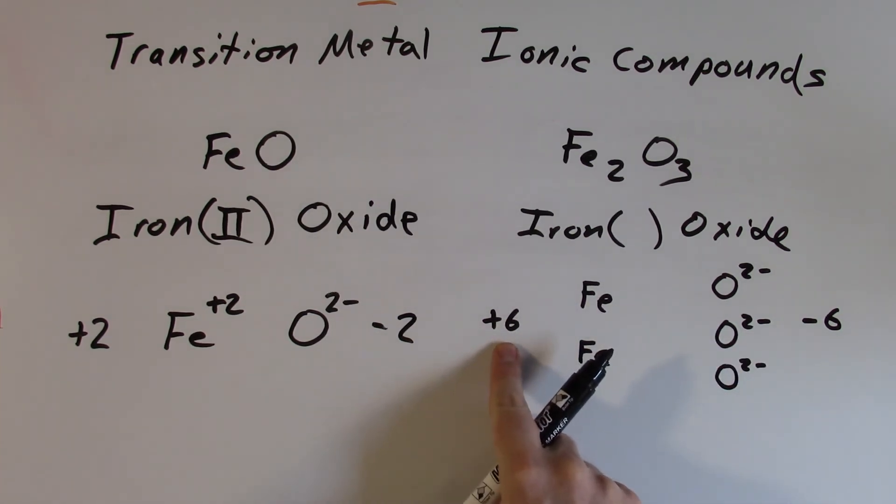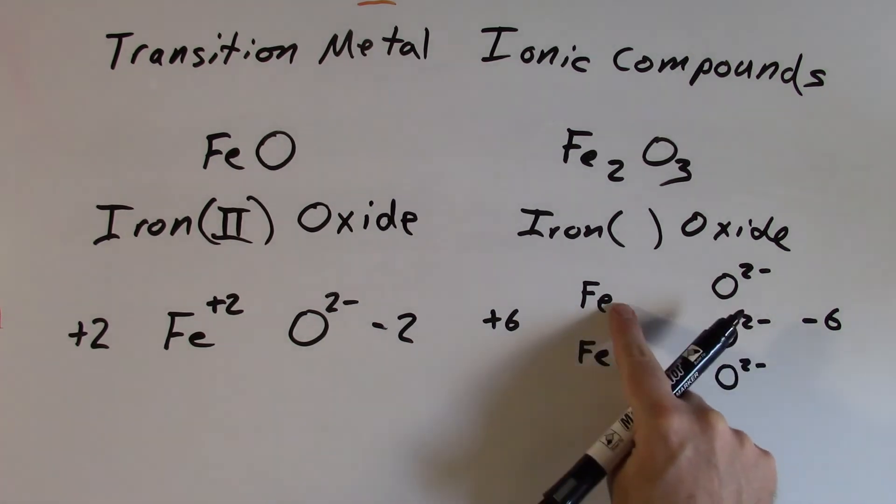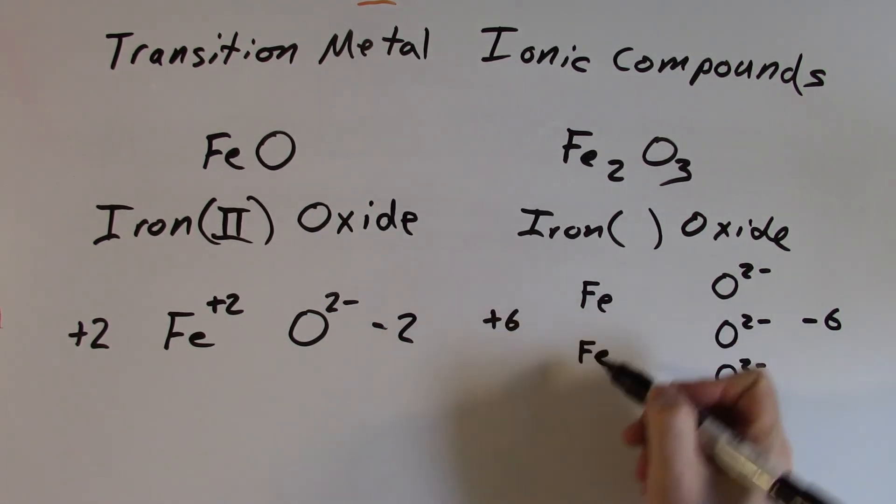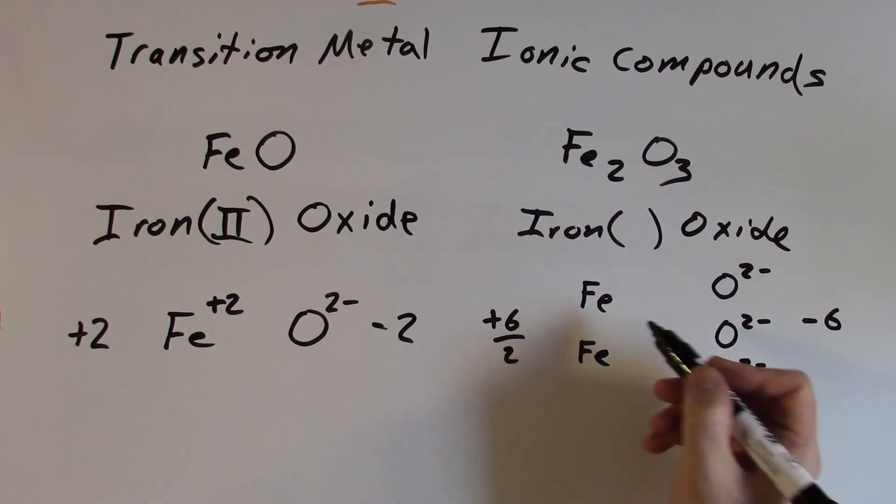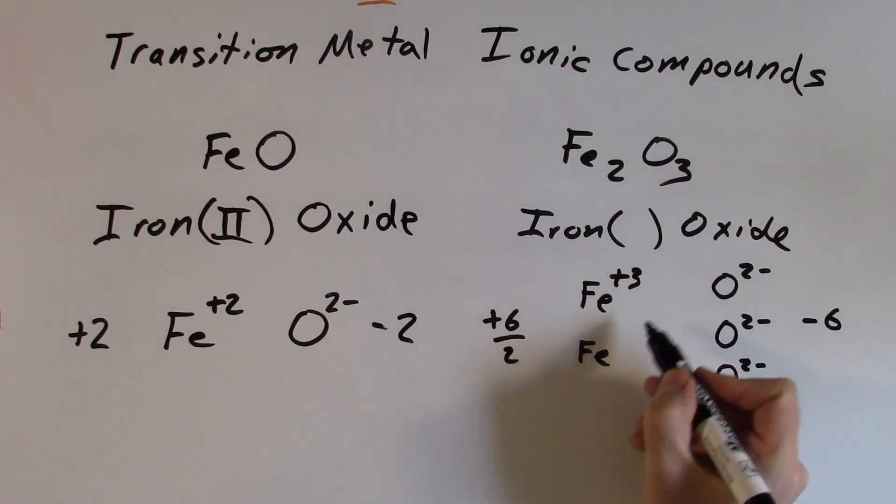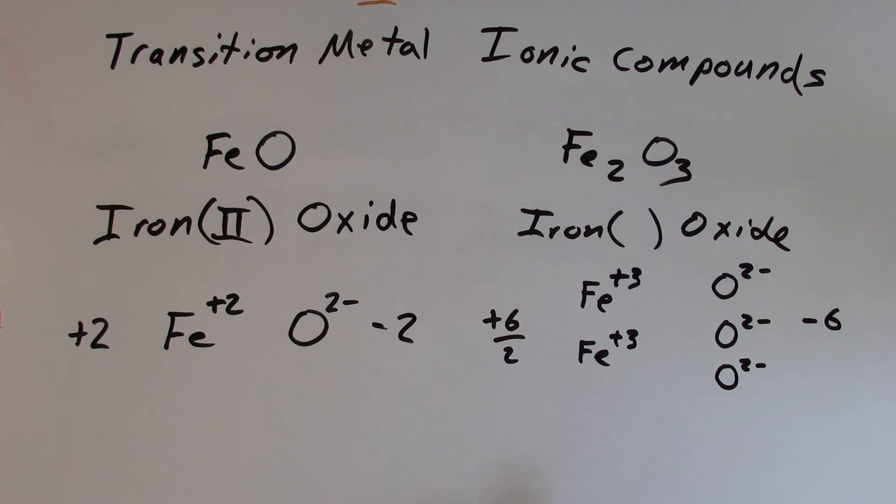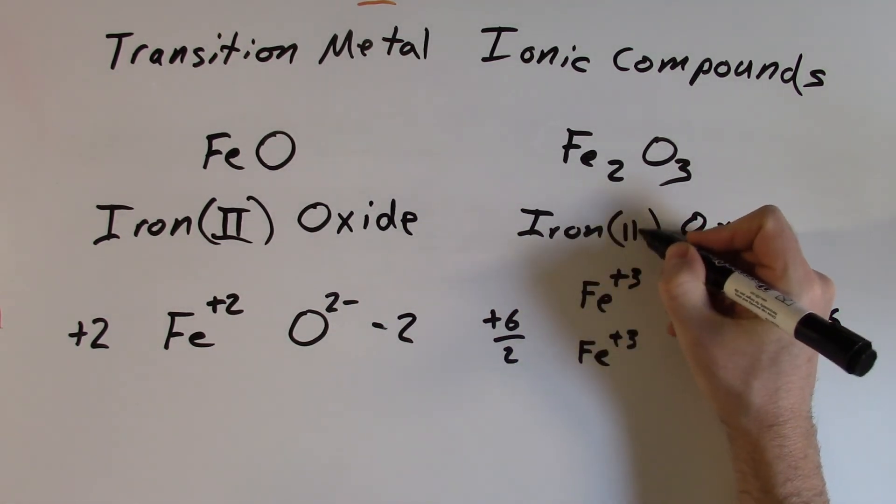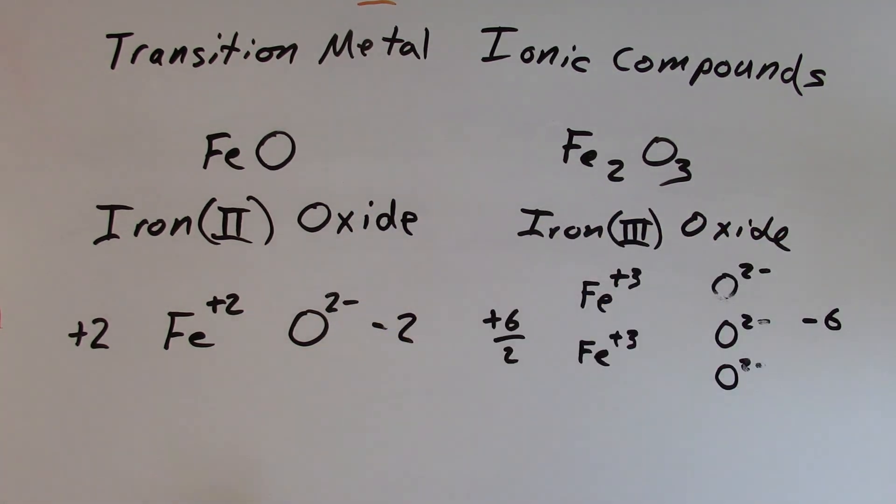That means I have to get a total of plus 6 then from these two iron atoms. So easy way to do that then, just take that positive charge that you need, divide it by the number of atoms. So I've only got two irons. So we're going to divide that plus 6 charge up over the two irons. That's a plus 3 for each iron atom then. So that means each iron in this has a plus 3 charge. And so we'll write the name for that one as iron 3 oxide.